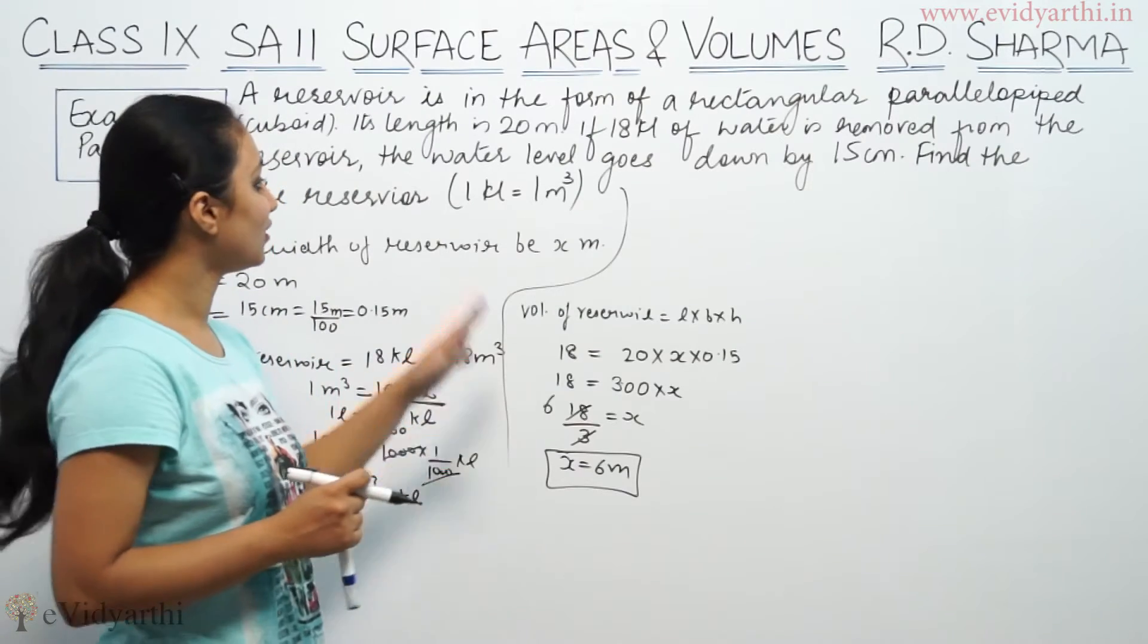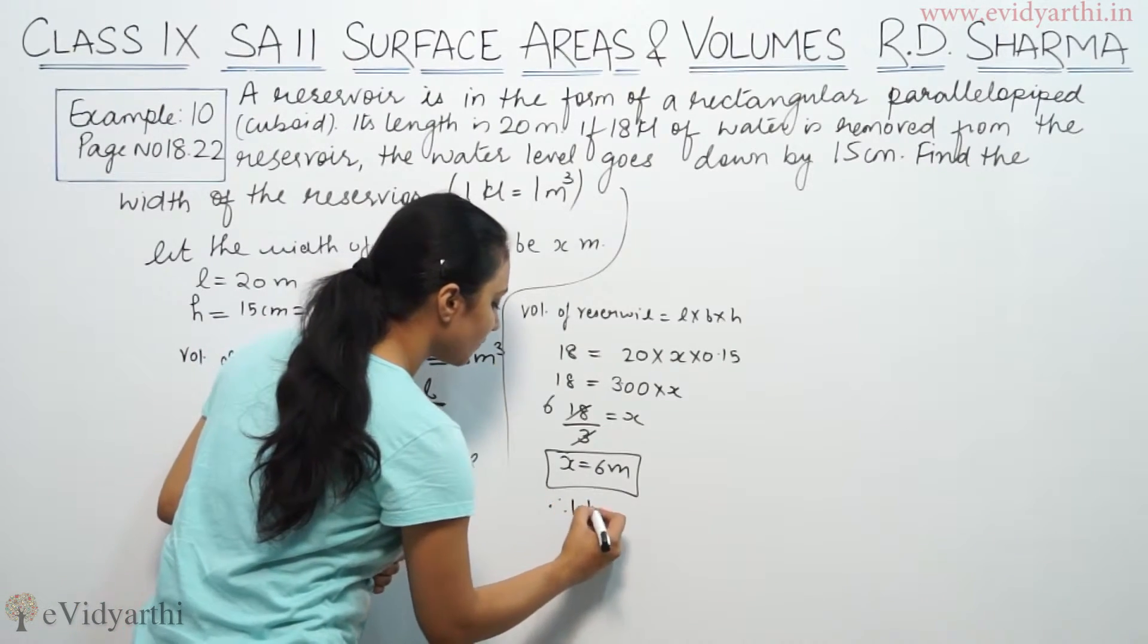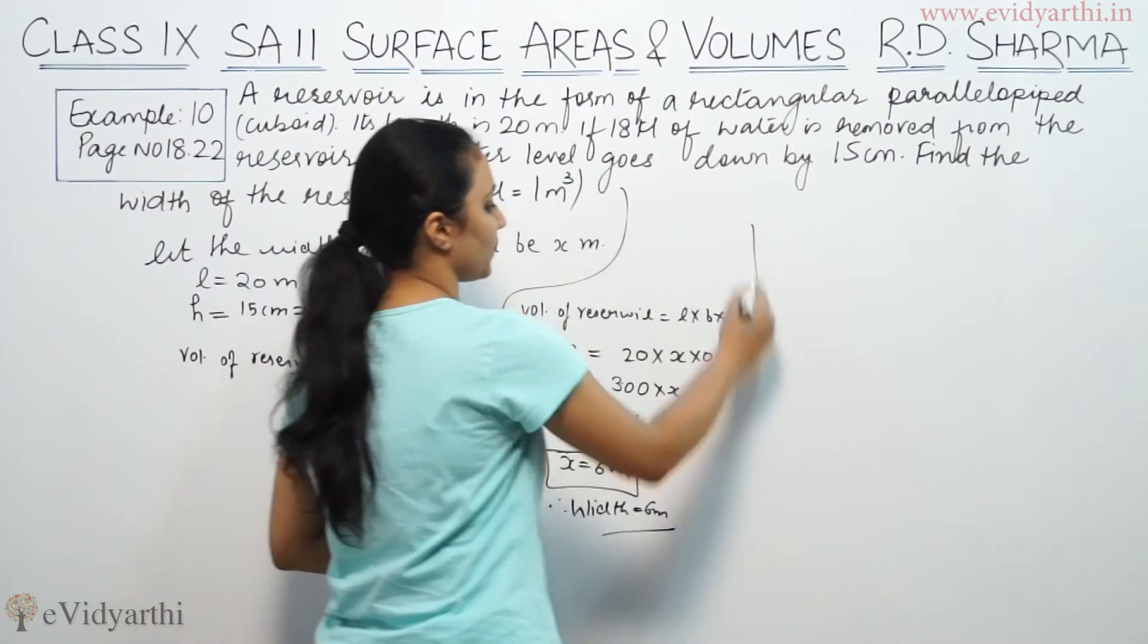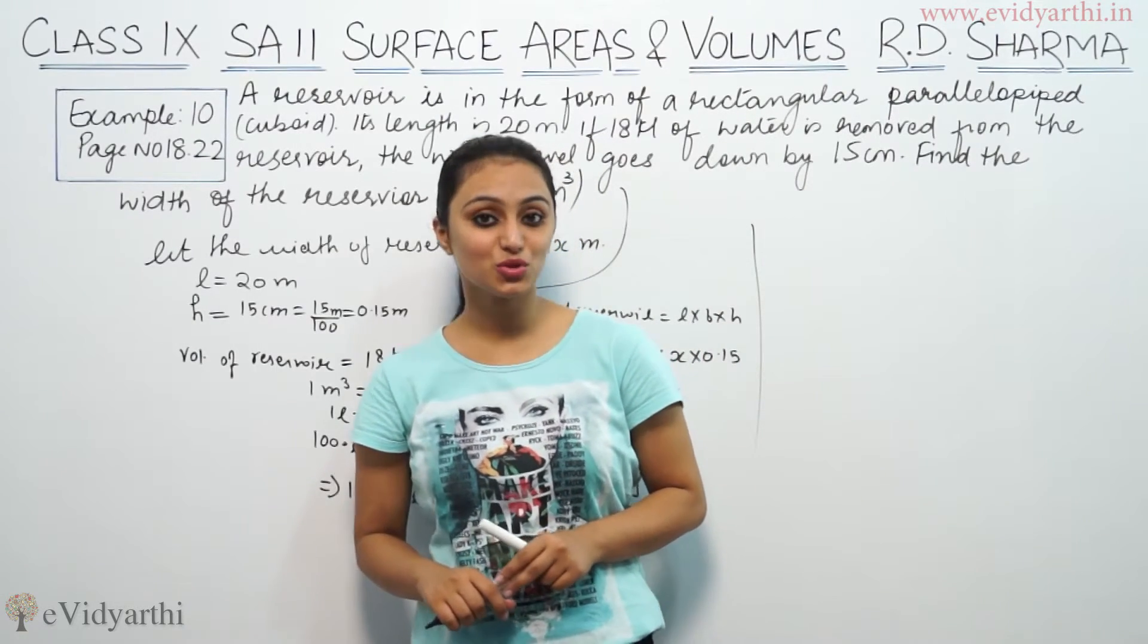We have to find the width of reservoir. Therefore the width is equal to 6 meters. This is the answer.